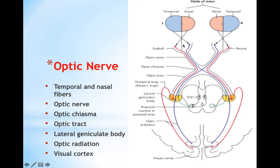So, we have the optic nerve, optic chiasm, optic tract, and optic radiation. Lesions which can affect the function of the eye will affect it according to the location of the lesion. The optic tract carries the union of ipsilateral temporal fibers with contralateral nasal fibers, continuing through to the visual cortex.